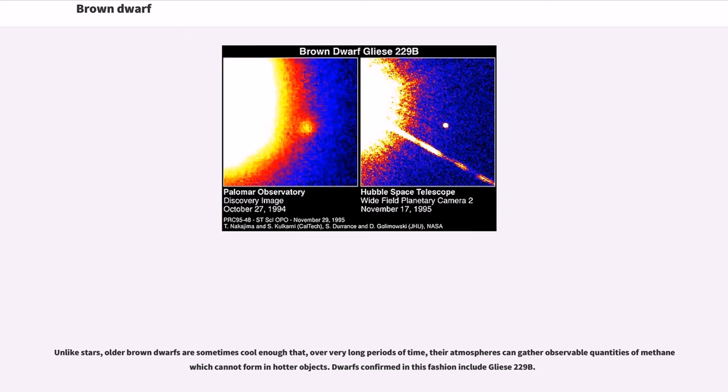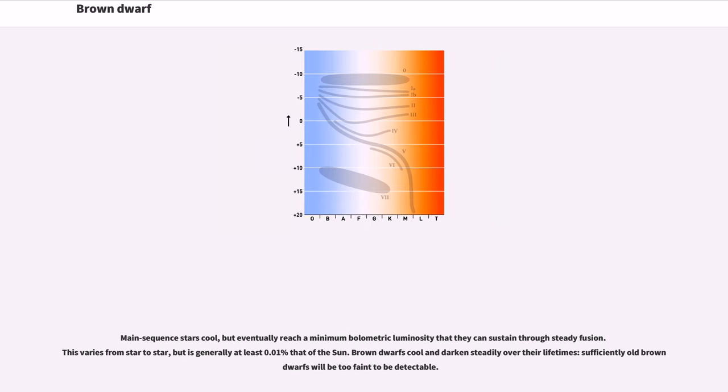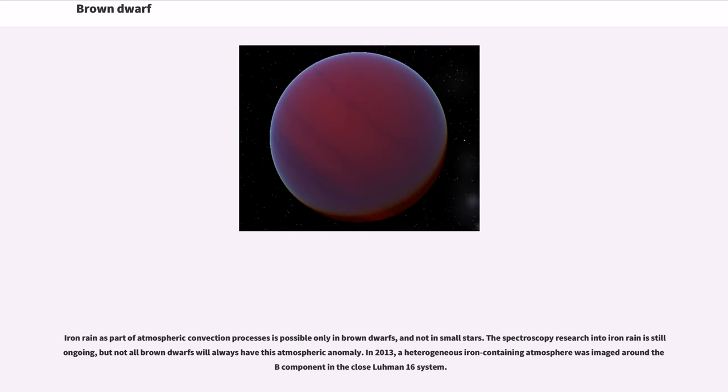Dwarfs confirmed in this fashion include Gliese 229B. Main sequence stars cool but eventually reach a minimum volumetric luminosity that they can sustain through steady fusion. This varies from star to star but is generally at least 0.01% that of the sun. Brown dwarfs cool and darken steadily over their lifetimes. Sufficiently old brown dwarfs will be too faint to be detectable. Iron rain as part of atmospheric convection processes is possible only in brown dwarfs and not in small stars. In 2013, a heterogeneous iron-containing atmosphere was imaged around a component in the close Luhman 16 system.